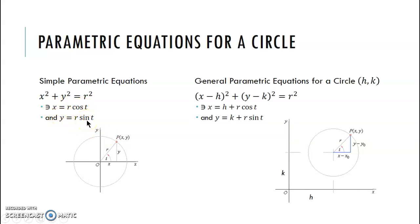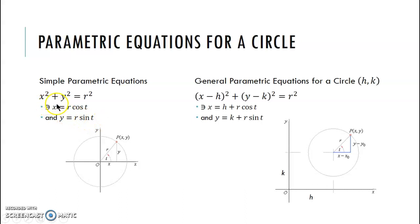If you remember from our unit circle, the x and y coordinates were given as cosine, sine — cosine always connected to our x coordinate, sine always connected to our y coordinate. So our basic circle centered at the origin has parametric equations: x = r·cos(t), y = r·sin(t). From this equation, you should be able to identify your radius and write your parametric equations.